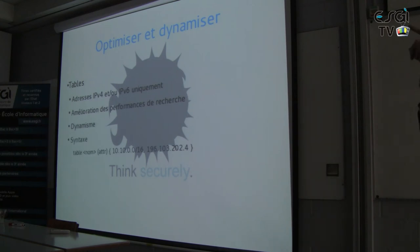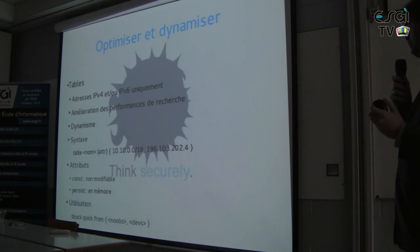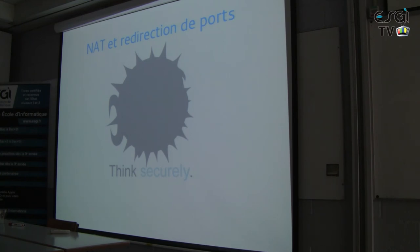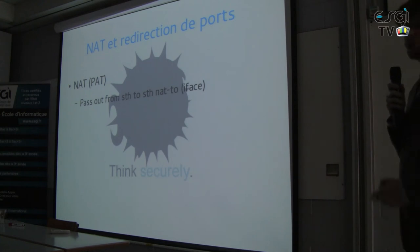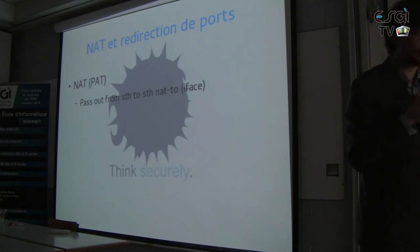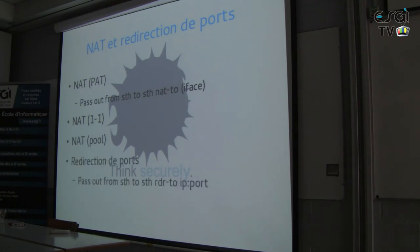The syntax is very simple: the table keyword, the name of the table, the directions, an attribute, and a list of addresses. The attributes can be 'const' for read-only and 'persist' to keep them in memory across reloads. You can add, delete, and show tables. The second part is NAT for PF. There are several types of NAT supported. First is PAT. NAT is very simple — you write it like a filter rule but with 'out' and you put 'nat-to' and the interface. If you put the interface, if the IP of the interface changes, it will follow. There is also NAT 1:1, which is not generally used, NAT with a specific address, and finally port redirection.